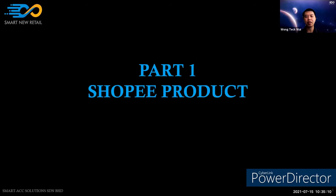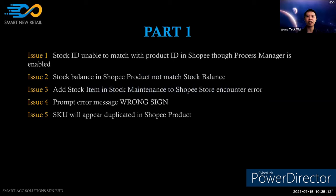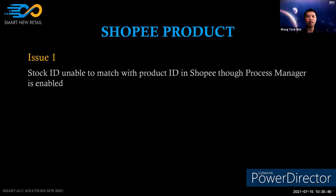The first part covers Shopee product issues. There are five topics: the first is stock ID unable to match with product ID in Shopee through the process manager even though it is enabled; the second involves stock balance and add-to-item issues.